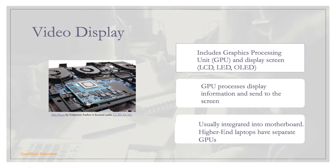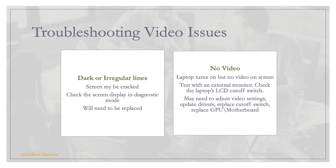The video display on a laptop includes a graphics processing unit (GPU) and a screen such as LCD, LED, or OLED. The GPU processes display information and sends it to the screen. Most laptops have the GPU integrated into the motherboard; higher-end laptops may have a separate GPU. Common display issues include dark areas and irregular lines, often caused by a cracked or damaged screen — users can crack the screen by grabbing it, dropping the laptop, or closing the lid forcefully. Check the display in diagnostics mode; if still incorrect, it will need to be replaced.